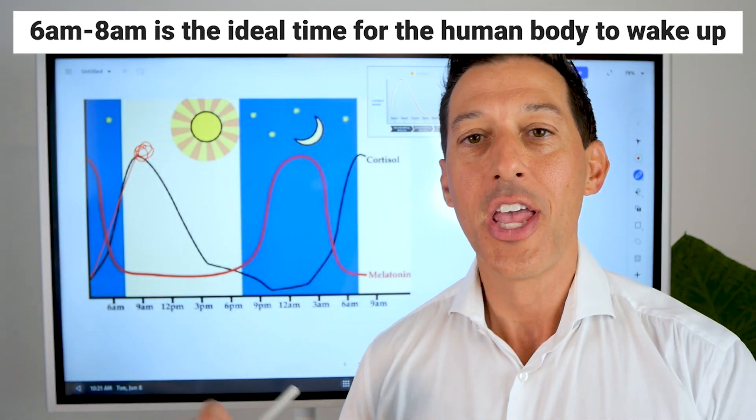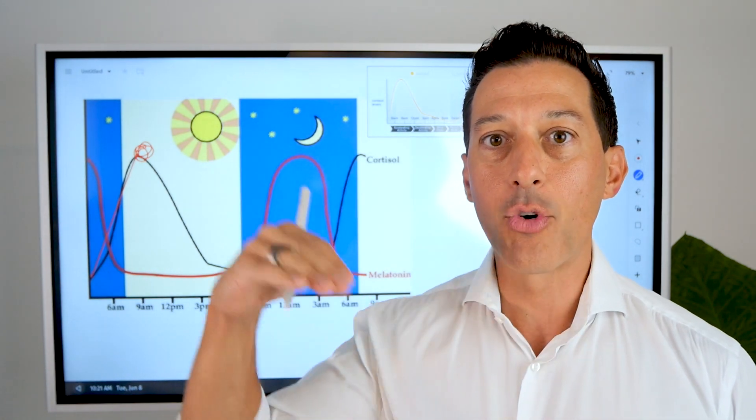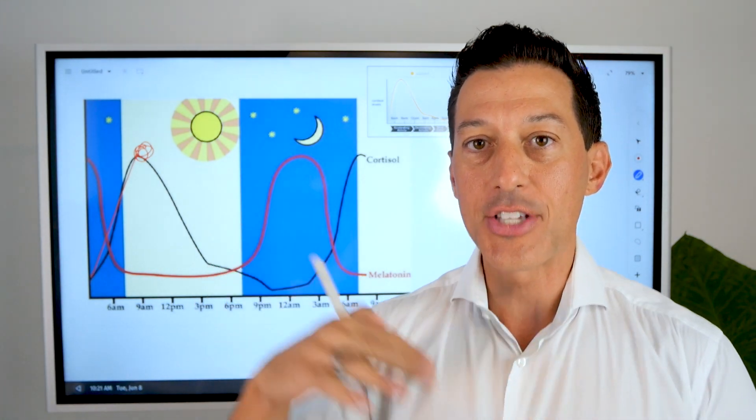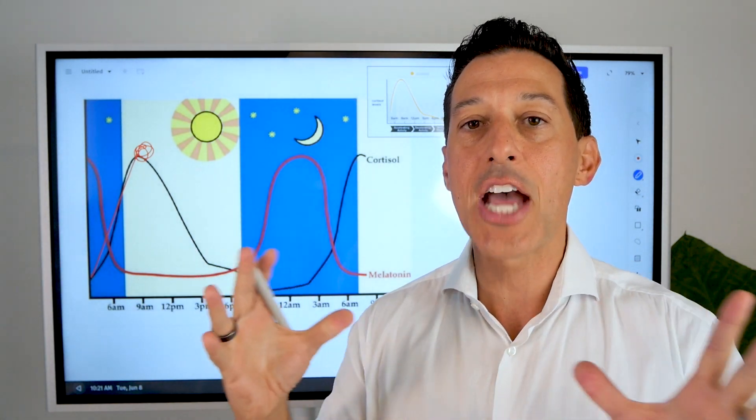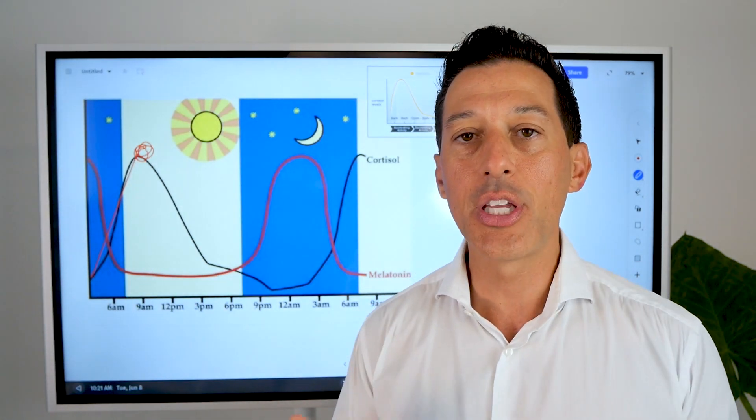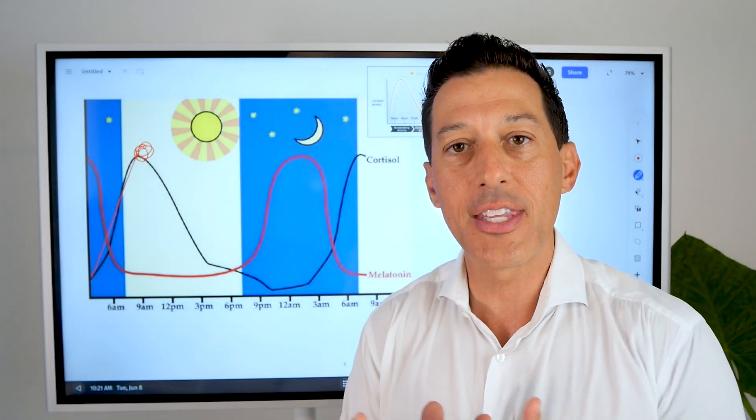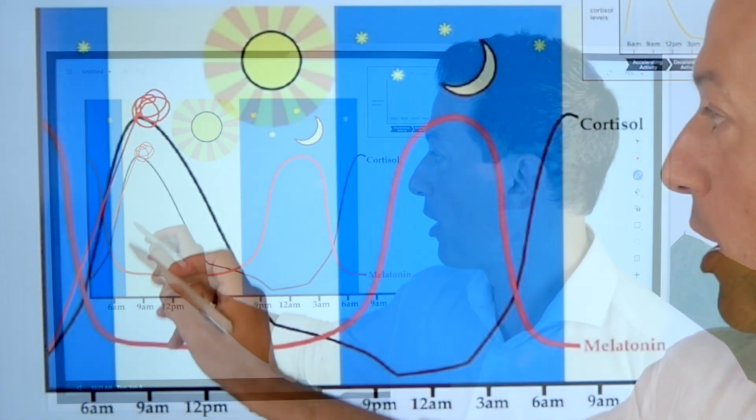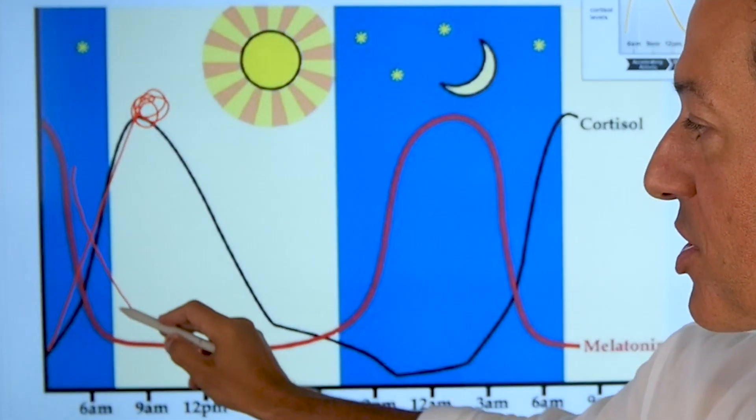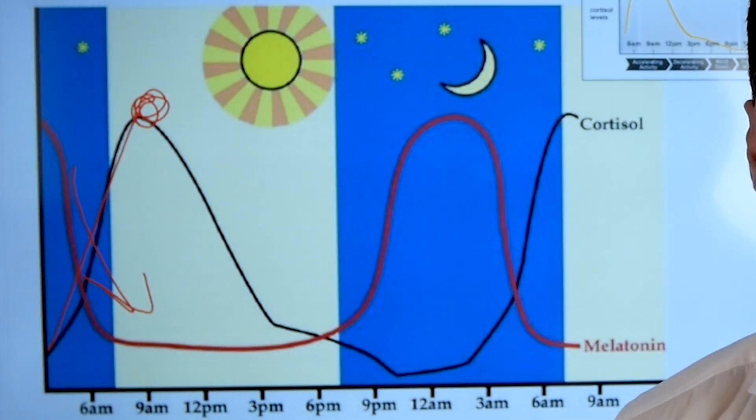There's something called the cortisol awakening response. Thyroid hormone starts to spike, testosterone starts to spike, cortisol begins to spike. These are natural processes. They naturally wake us up. When we get these hormones, these positive hormones moving up in the morning between 6 and 8, melatonin, which is the sleep hormone, begins to go down during the day.